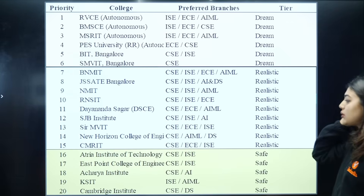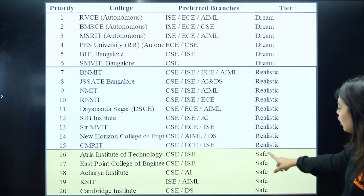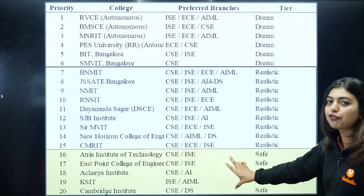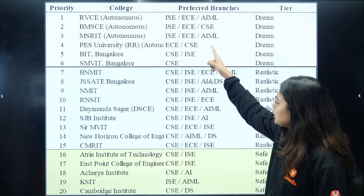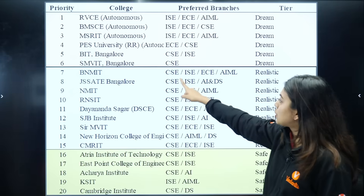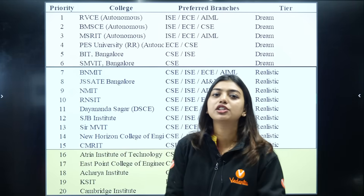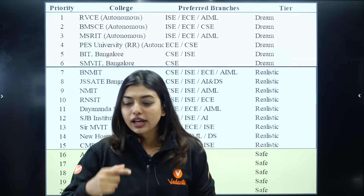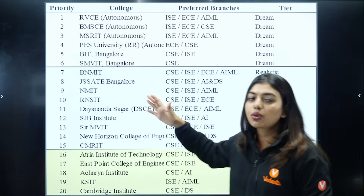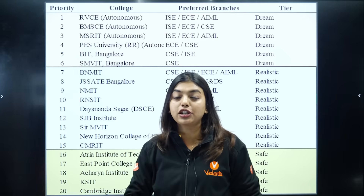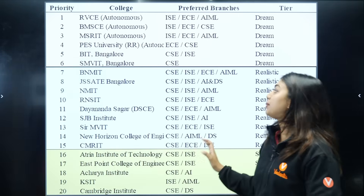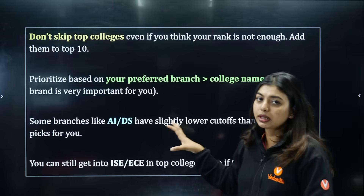For an 11,000 rank student in this example, the safe options include Acharya Institute, KSIT, and Cambridge Institute. For each college, choose multiple branches — don't just pick one branch per college. Choose 3 to 4 branches per college because you don't know which branch you might get. It's like throwing the right shot. Take note of this — make a spreadsheet, and if you have doubts, share it with me.